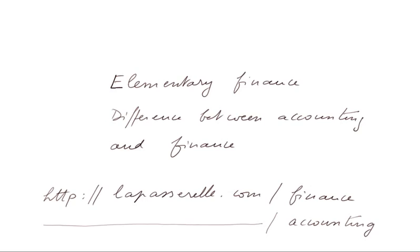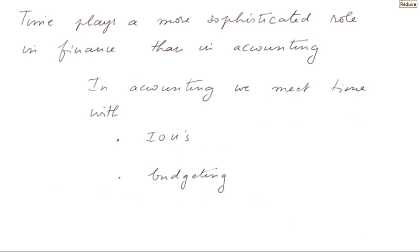The difference between accounting and finance can be summarized very simply: time plays a more sophisticated role in finance than in accounting. In accounting, we meet time with AOUs, and also with budgeting — that is, planning the next years — which is part of cost accounting. We shall review AOUs.